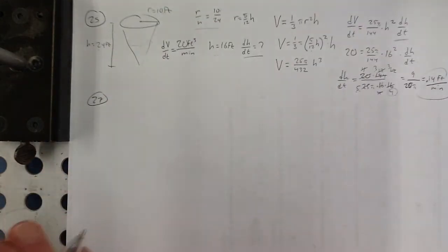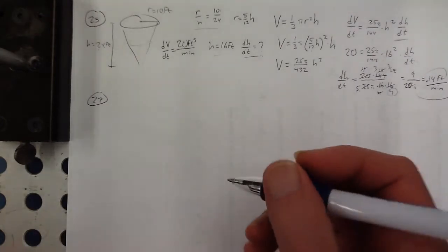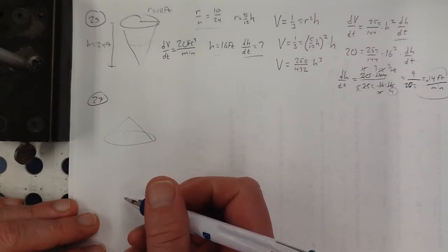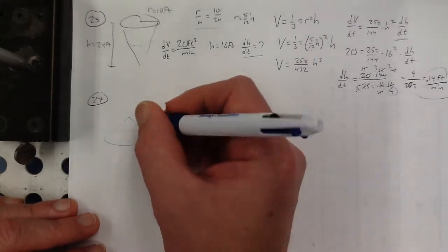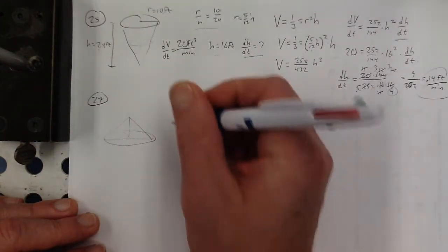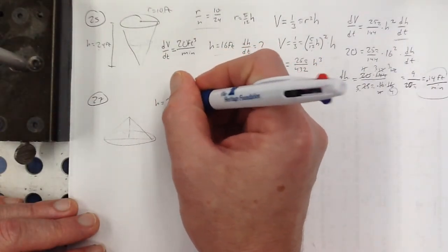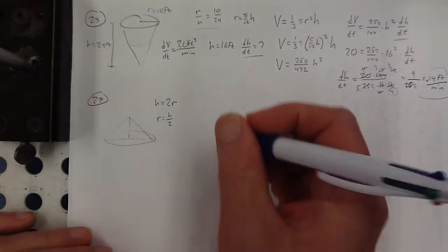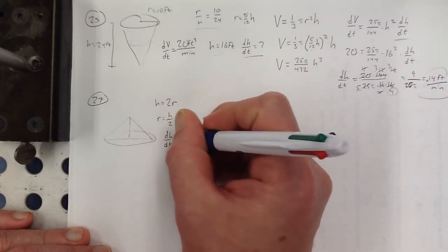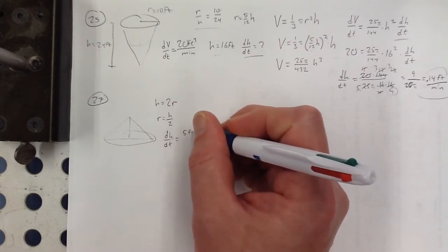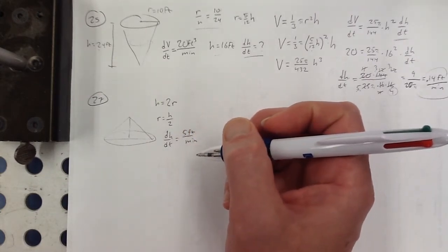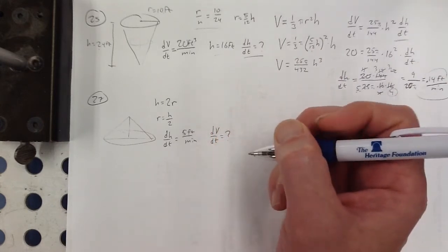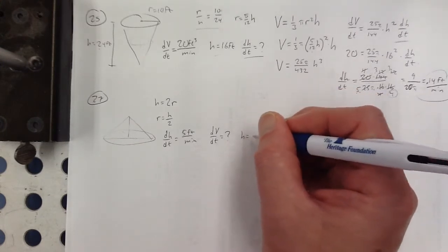Number 27: sand pouring from a chute forms a conical pile — pointy side up. The height is always equal to the diameter, so H equals 2R, or R equals H/2. If the height increases at a constant rate — dH/dt — at 5 feet per minute, then at what rate is sand pouring from the chute when the pile is 10 feet high?